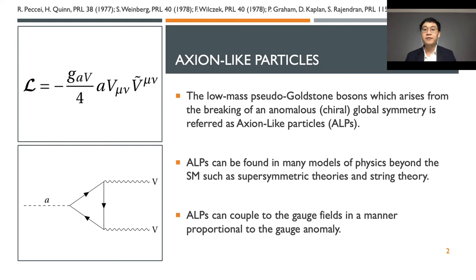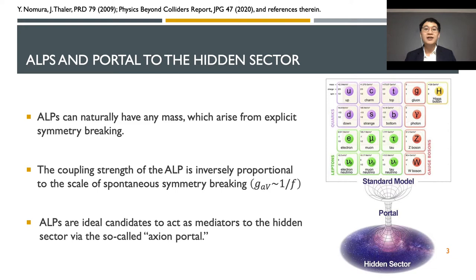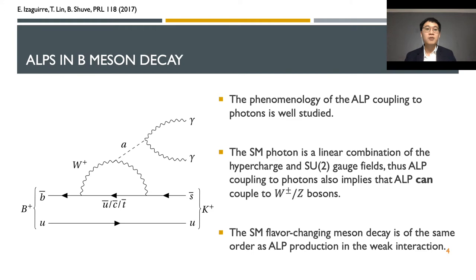They can interact with the standard model gauge boson through a fermion loop which is proportional to the gauge anomaly. The coupling Lagrangian with the gauge field is shown on the top-left figure. Dark matter interacts with standard model matter in an extremely weak manner, thus we suspect there are some new particles that act as the portal between the hidden sector and the standard model. Because axion-like particles can naturally have any mass and its coupling strength is inversely proportional to the scale of spontaneous symmetry breaking, which is quite feeble, they are ideal candidates to act as mediators to the hidden sector through so-called axion portals.